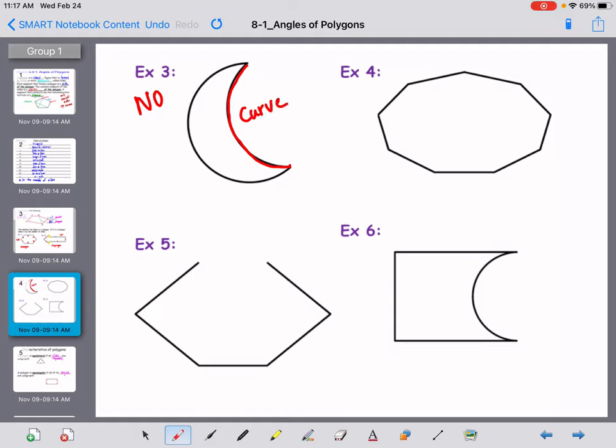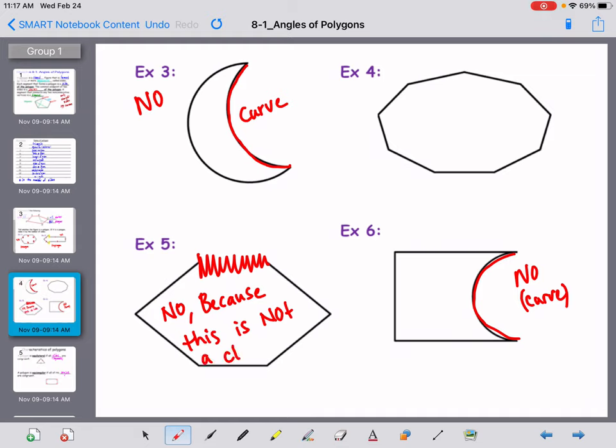Are any of the other figures a no? Example six would be a no because there's another curve. And what about five? Five has an opening right here. Five is a no because of that opening. We would say because this is not a closed figure. So a polygon has to be closed.